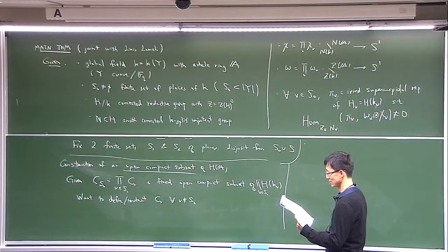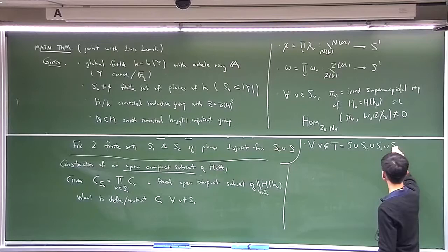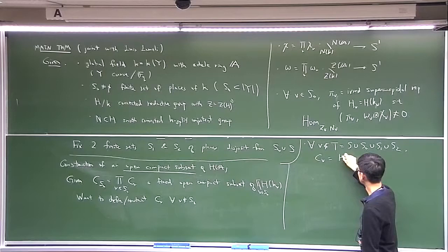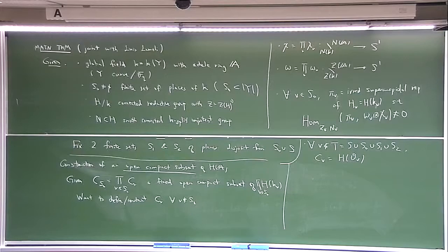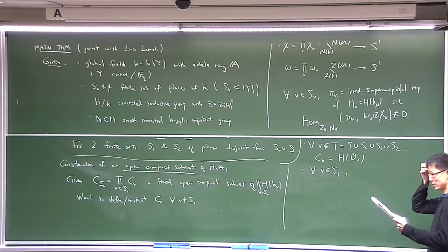Suppose I'm given a C_{S0}, a fixed open compact subset of H_A at S0. I want to define open compact subsets C_v for all other v and then put them together. For all v not in T — where T is S union S0 union S1 union S2 — I take C_v to be the hyperspecial maximal compact. For all v in S2, I take C_v to be I_v^-.